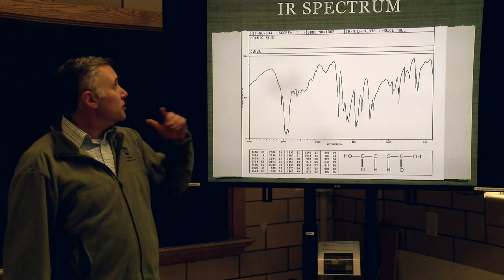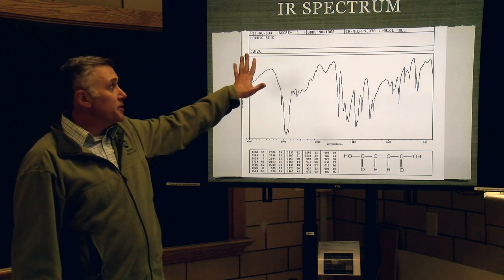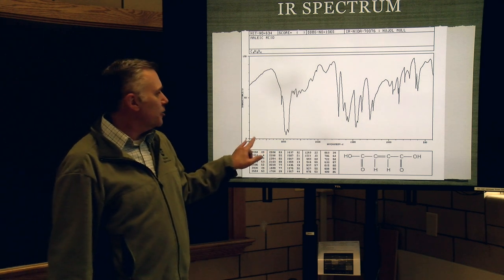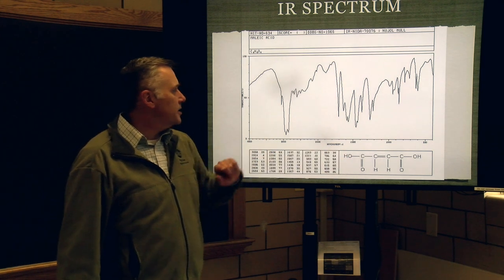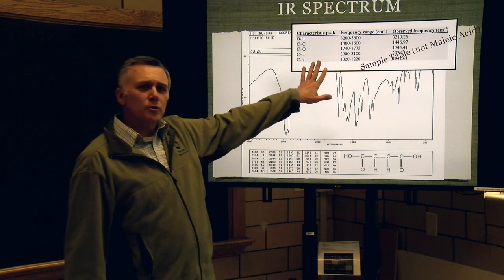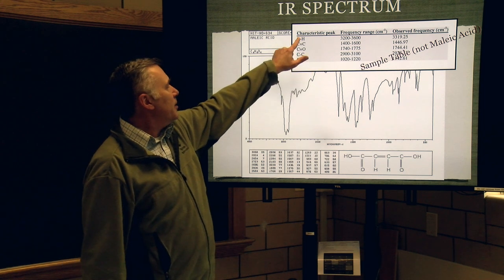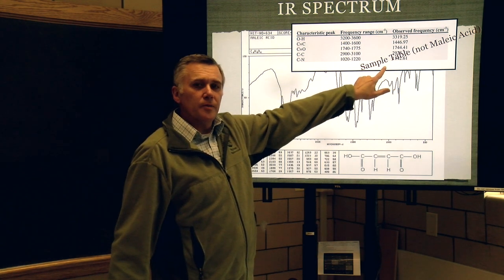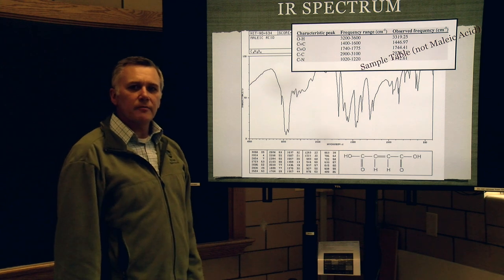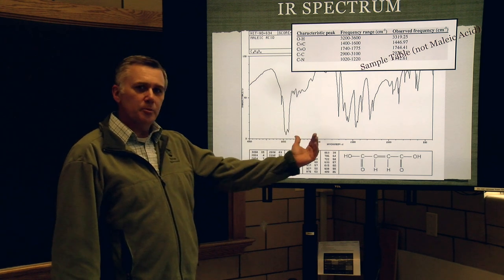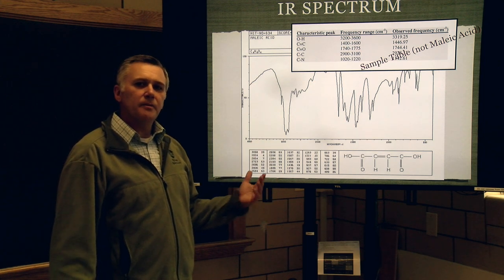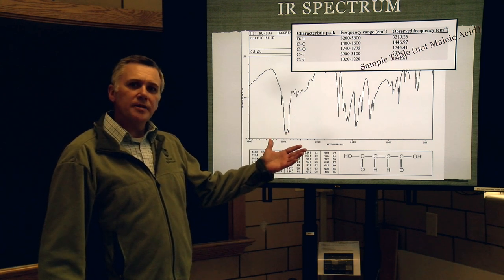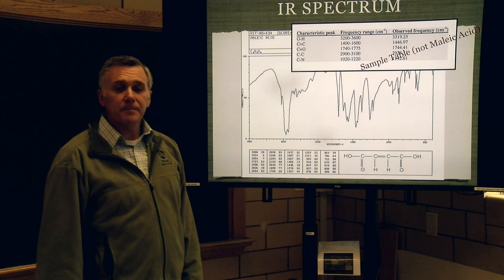We'll also be getting IR spectra. You want to evaluate the spectrum, particularly from 4,000 down to about 1,500 wavenumbers, and include that in your lab report. A good way to do this is to write a table of the characteristic peaks you would find in the IR spectra — what their ranges are and what is actually observed. We'll do this for both polystyrene and nylon. IR is a good way to measure those functional groups that are present. You'll find the IR spectrum in your lab eLearning course site under Resources.